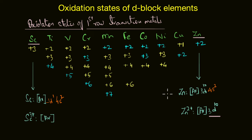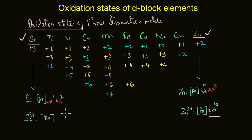In the +2 state, zinc acquires a stable d¹⁰ electronic configuration, which is again a stable state. Pure oxidation states are observed in elements that either have too few electrons to share or lose, like scandium, or too many d electrons, as in the case of zinc. Too few electrons limits the number of oxidation states, which is why scandium does not show variable oxidation states. Conversely, too many d electrons means not enough orbitals are available to share them, again resulting in a limited number of oxidation states.